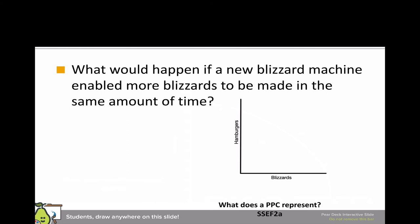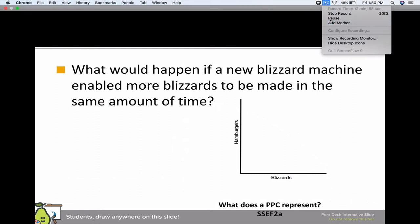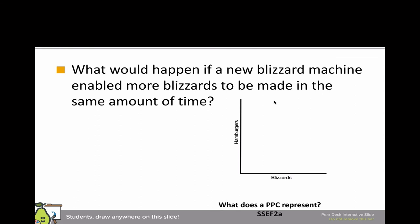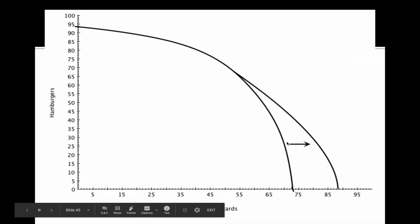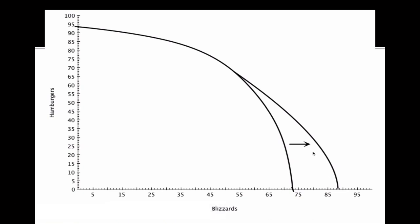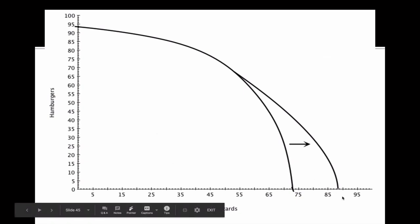What would happen if a new blizzard machine enabled more blizzards to be made in the same amount of time? If we got a new fancier blizzard machine that helped us go faster, this would be called growth — so if our impossible becomes possible. Now instead of making 80 blizzards we can make 100, so we're going to have growth on this PPC. But notice with the blizzard machine, we didn't affect the maximum amount of hamburgers we could make — we only affected the maximum amount of blizzards.